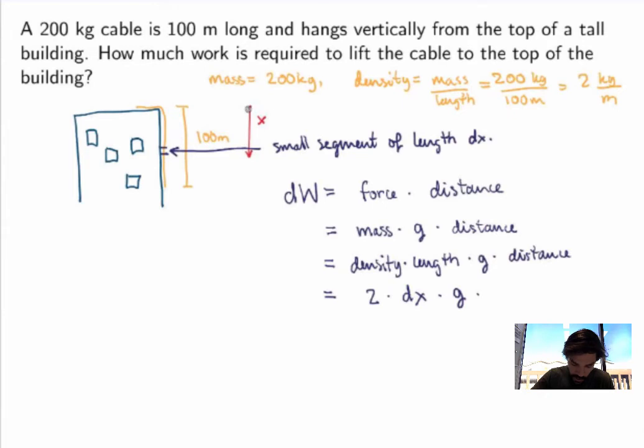And the distance that I'm lifting this small segment, so because I've chosen the origin of my coordinate to be right here, the position of this segment is x. So small segment of length dx and position x. So the distance that I'm lifting this segment is exactly equal to x.